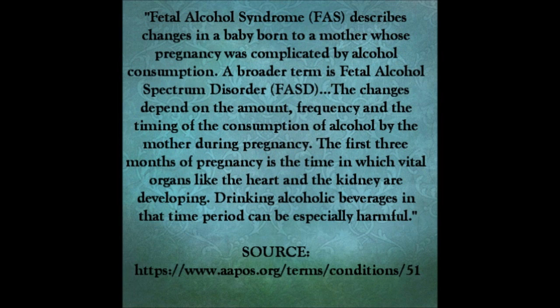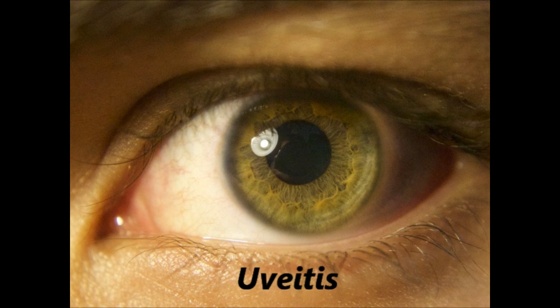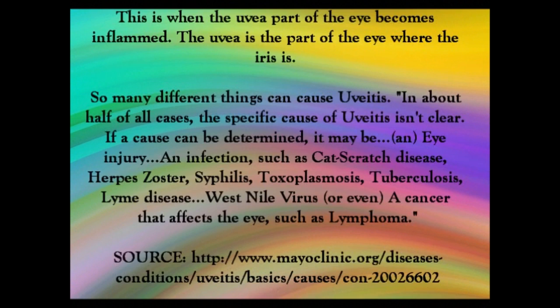Next is uveitis. This is when the uvea — the part of the eye where the iris is — gets infected. So many things can cause uveitis, from syphilis, toxoplasmosis, cat scratch disease, tuberculosis, Lyme disease, West Nile virus, herpes, or even cancer. Here's an image of the anatomy of the eye.